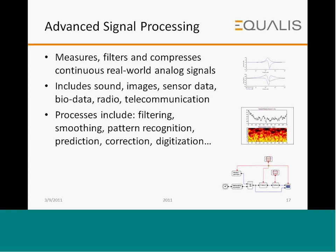Advanced signal processing — you may want to measure, filter, or compress continuous real-world analog signals of various types including sound, data, images, sensor data, biological data, radio, and telecommunications signals. Processes include filtering, smoothing, pattern recognition, prediction, correction, and digitization. These capabilities are available in the advanced signal processing toolbox in Scilab.